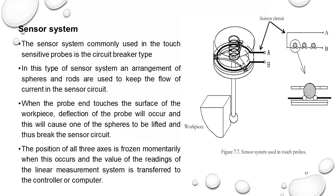The sensor system is the end part of the probe. Touch-sensitive probes use a circuit breaker type — an arrangement of spheres and rods keeps the flow of current in the sensor circuit. When the probe touches the surface of the workpiece, deflection occurs, causing one of the spheres to lift and break the sensor circuit. The position of all three axes is frozen momentarily when this occurs, and the linear machine system values are transferred to the controller.